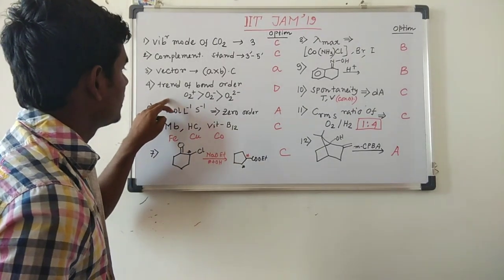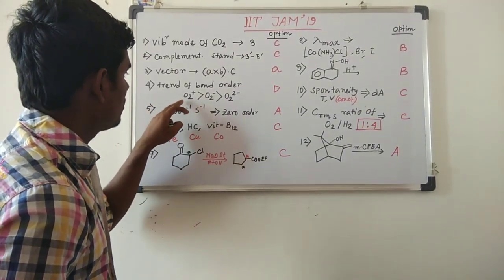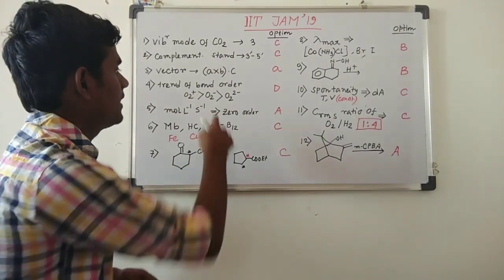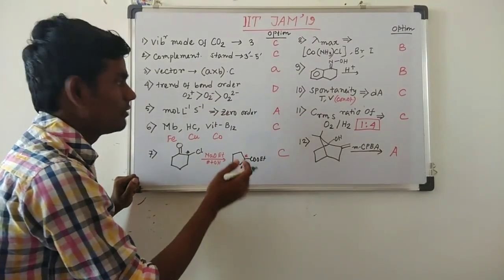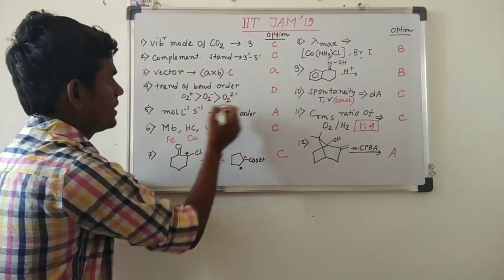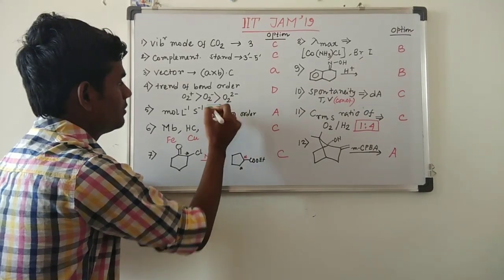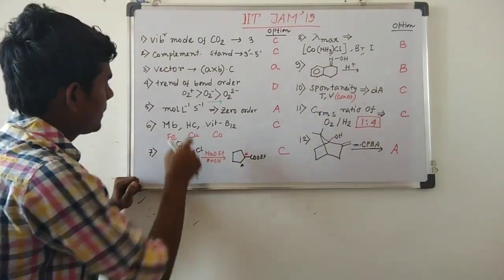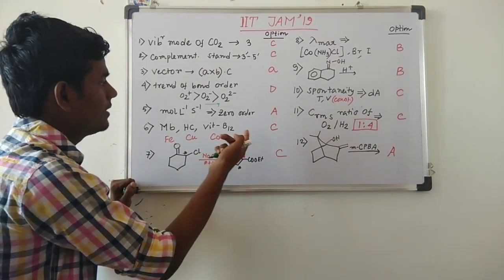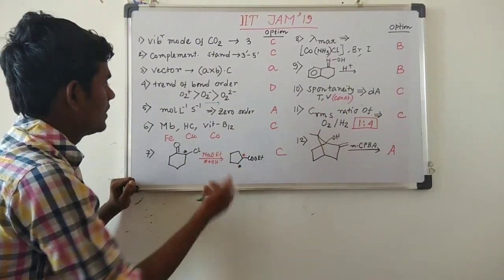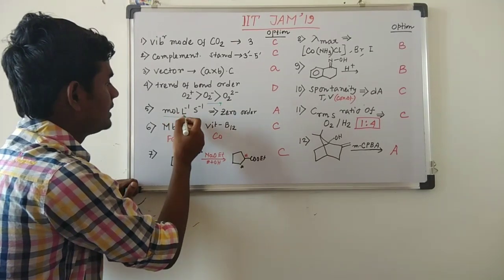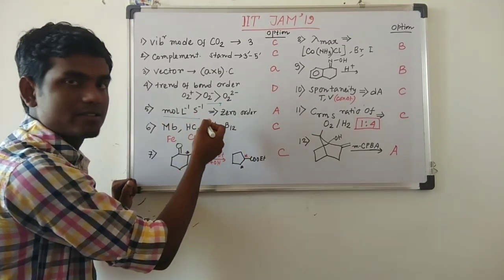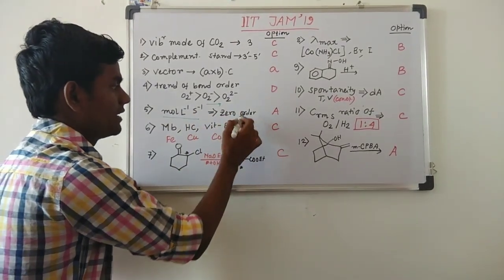Then they have asked about the bond order of some oxygen cation and anions. It's very simple, you can do it anytime - O2 plus and O2 minus, this is the common trend you can observe, so the answer is D. And then there are units given, so what is the order of the reaction they have asked. It's easy to do: mole per liter inverse, second inverse, so it's zero order reaction and the option will be A.